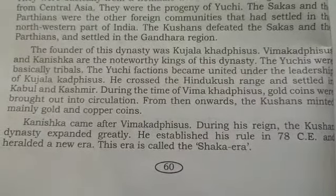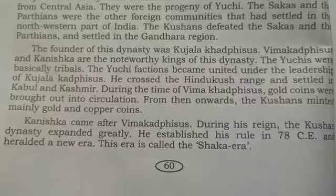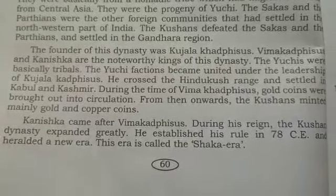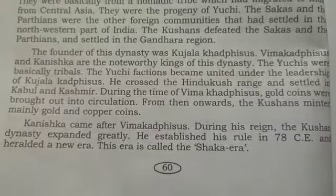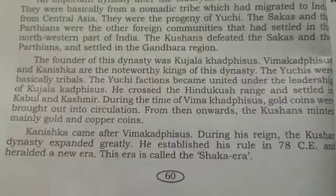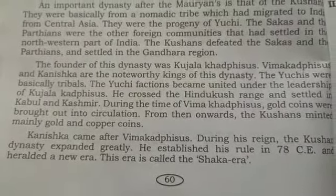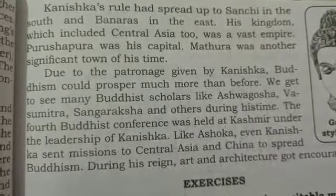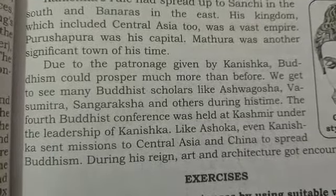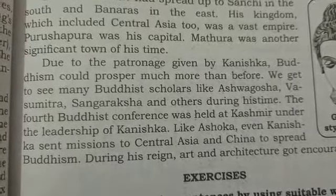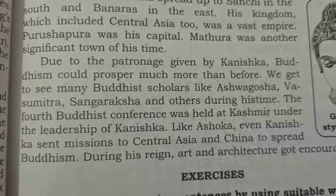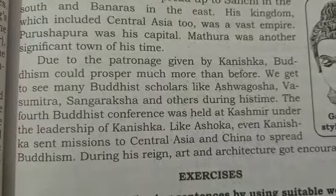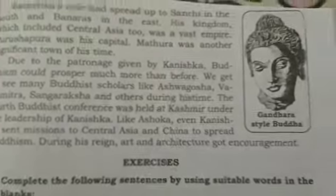During Kanishka's reign, the Kushana dynasty expanded greatly. He established his rule in 78 CE and started a new era called the Shaka Era. Kanishka's rule spread as far south as Sanchi and as far east as Banaras. His kingdom also included Central Asia. It was a vast empire — Purushapura was his capital, and Mathura was another significant town.